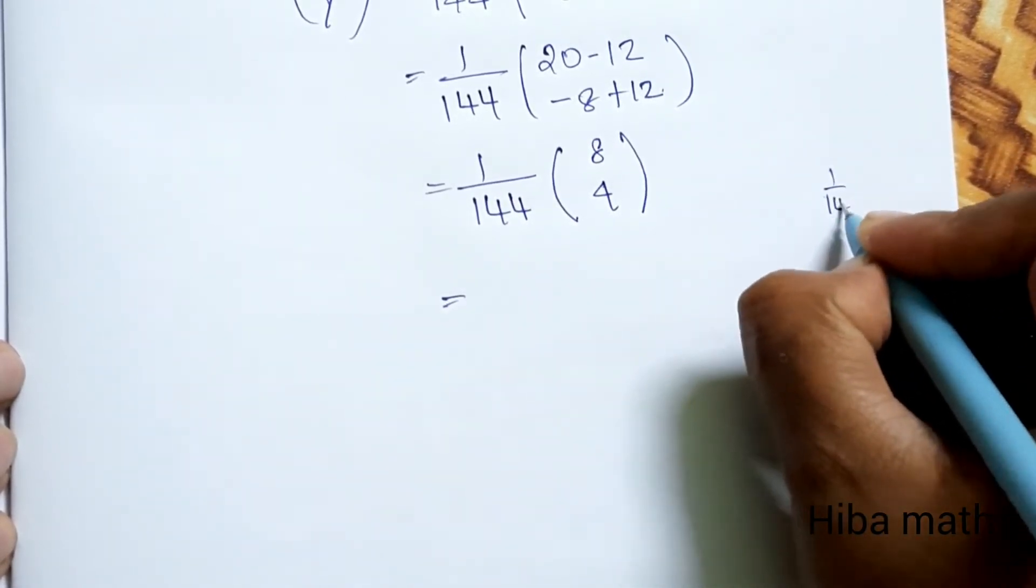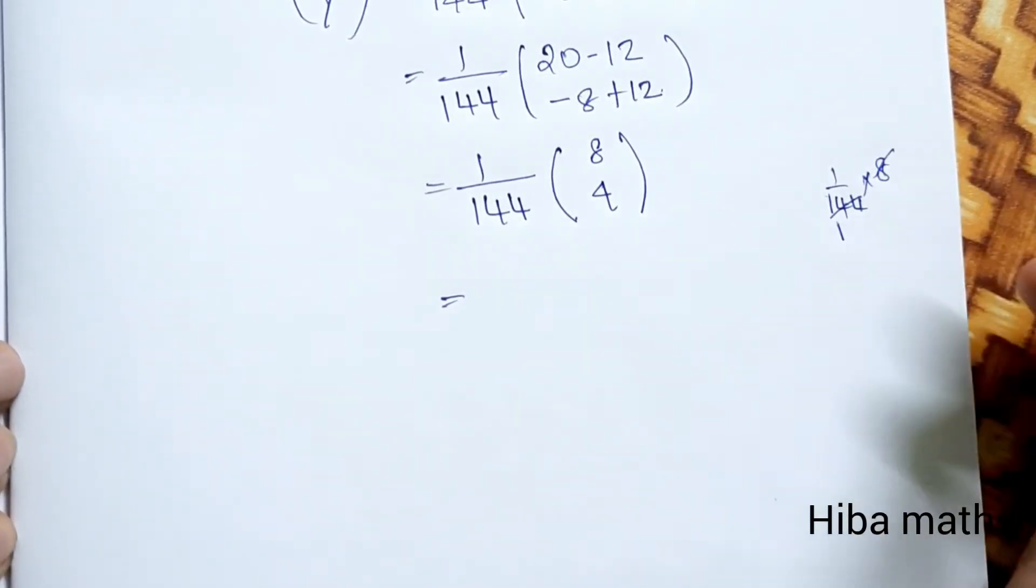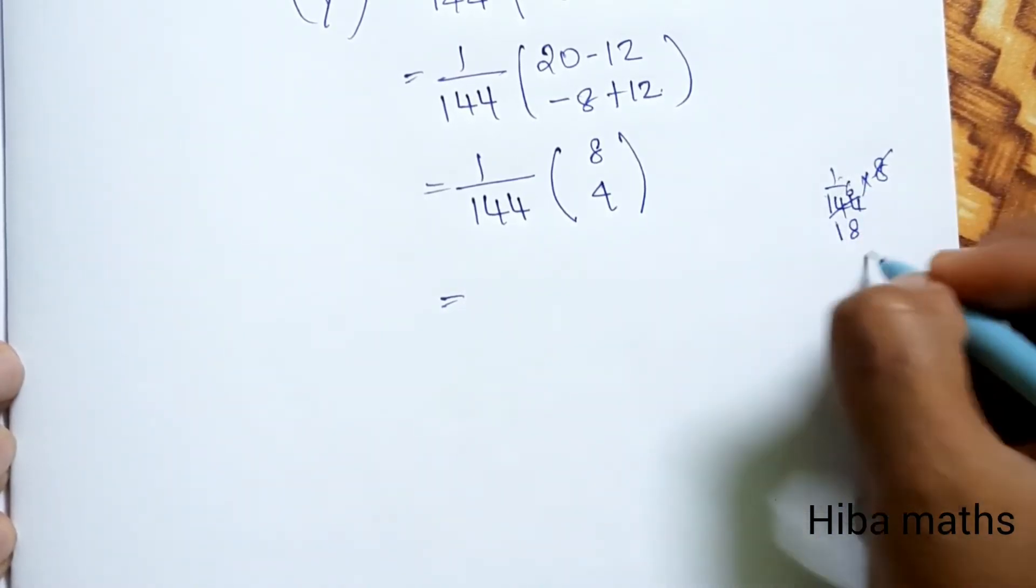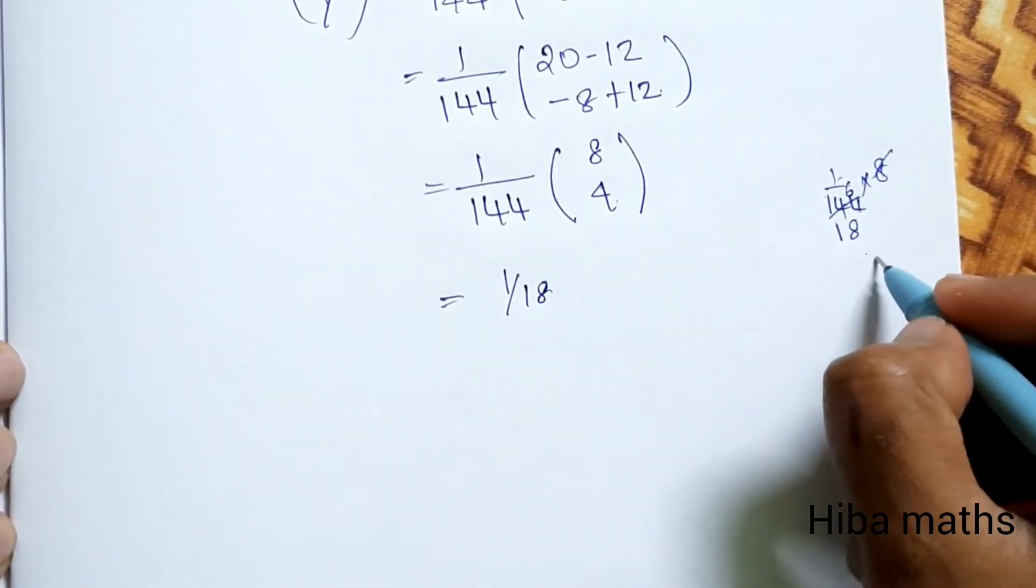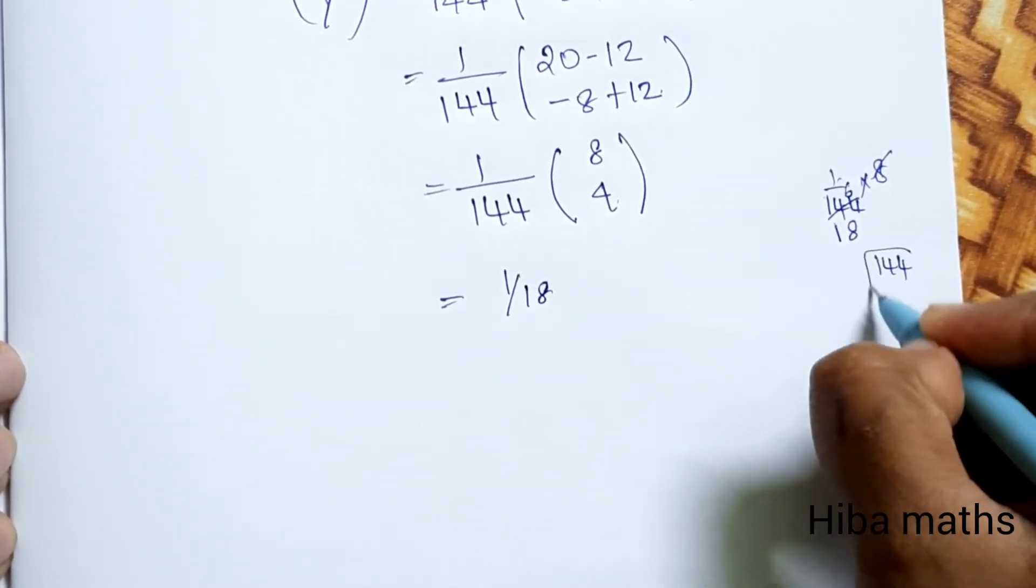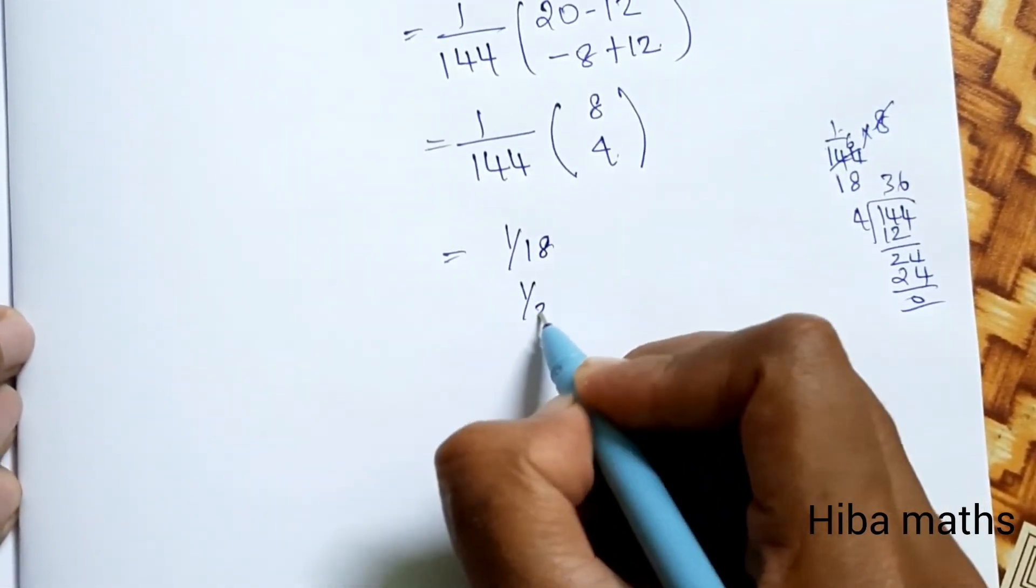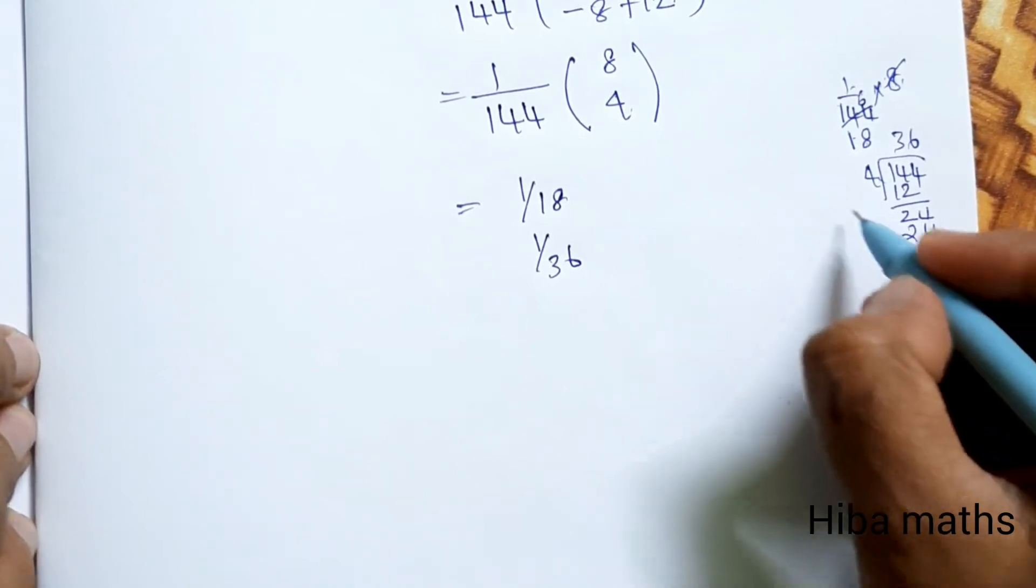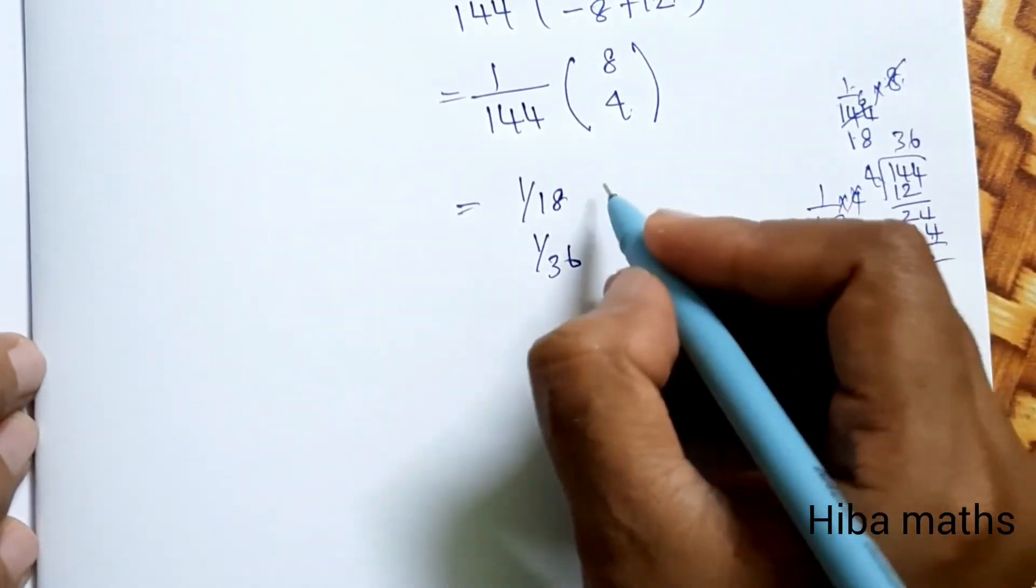X, Y equals 1 by modulus of A times adjoint of A times B. This equals 1/144 times [20, -12; -8, 12] times [1; 1] equals 1/144 times [8; 4], which equals [1/18; 1/36].